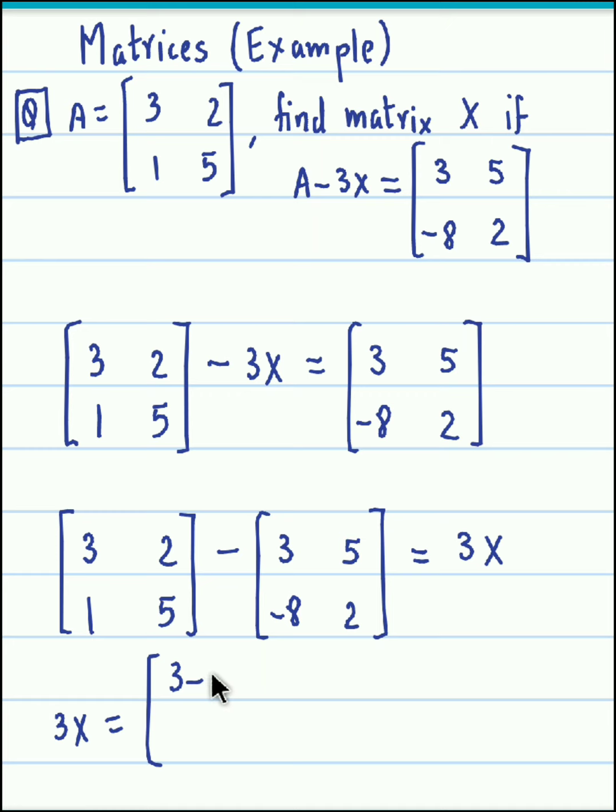So we get the value for 3X as, now if we subtract the elements, let's perform the subtractions: 3 minus 3, next is 2 minus 5, so that is 2 minus 5, 1 minus negative 8, so that becomes 1 plus 8, and 5 minus 2, that's 5 minus 2.